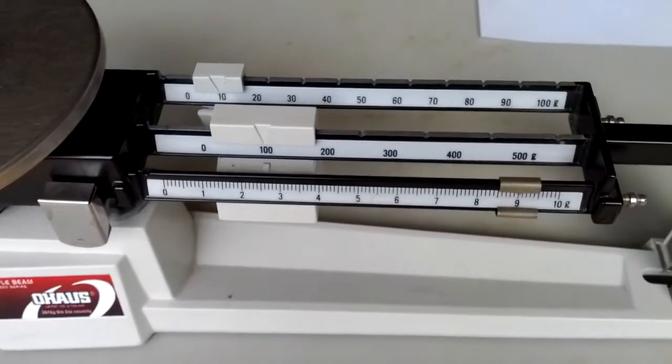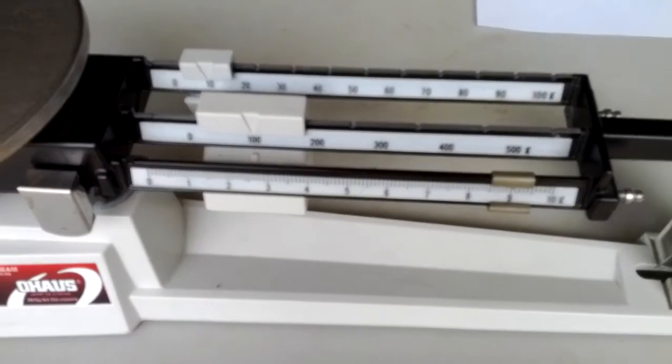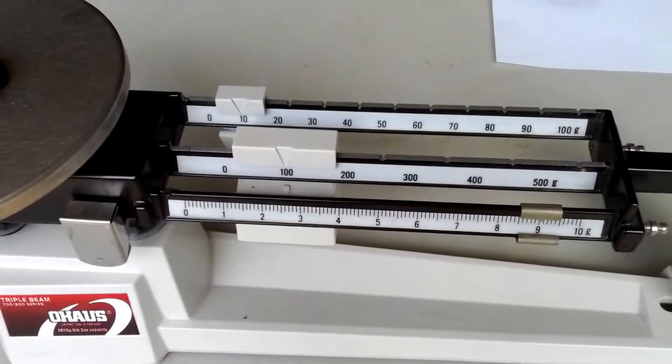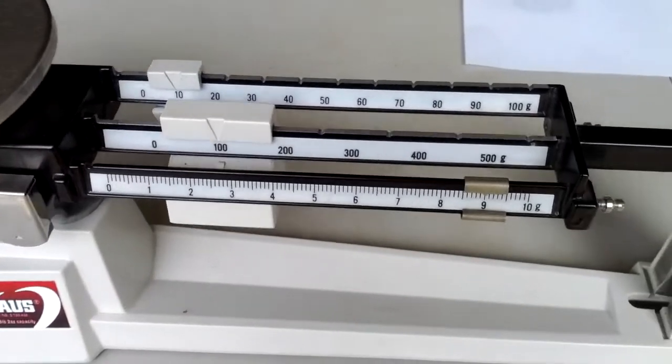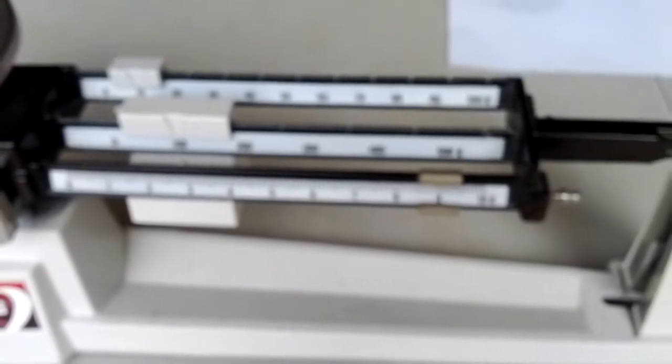So let's go back over here and look at that one more time. The hundreds rider is at a hundred. The tens rider is right at ten. And the ones rider is right at nine. So that's a hundred and nineteen grams.